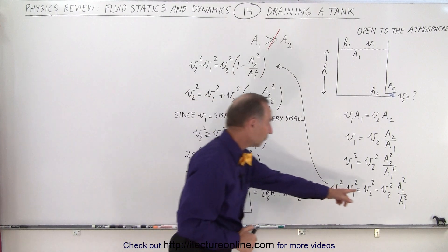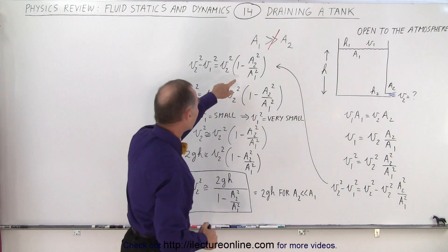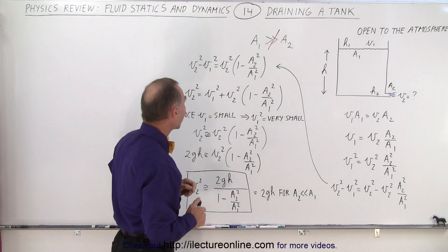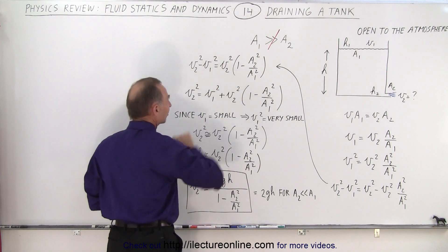Then we're going to factor out v2 squared, we end up with this equation right here, and then we move the minus v1 squared on the left side to the right side.